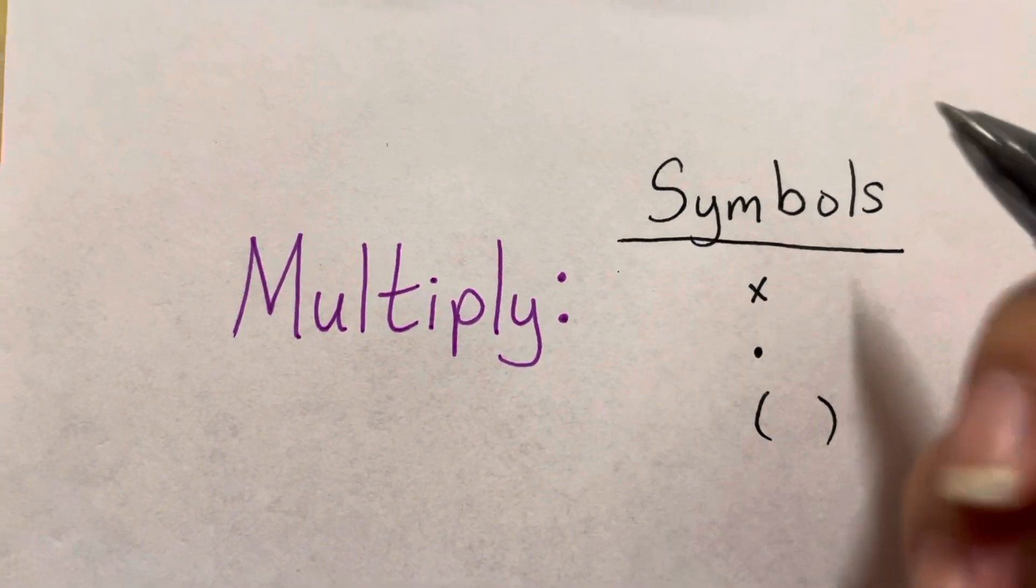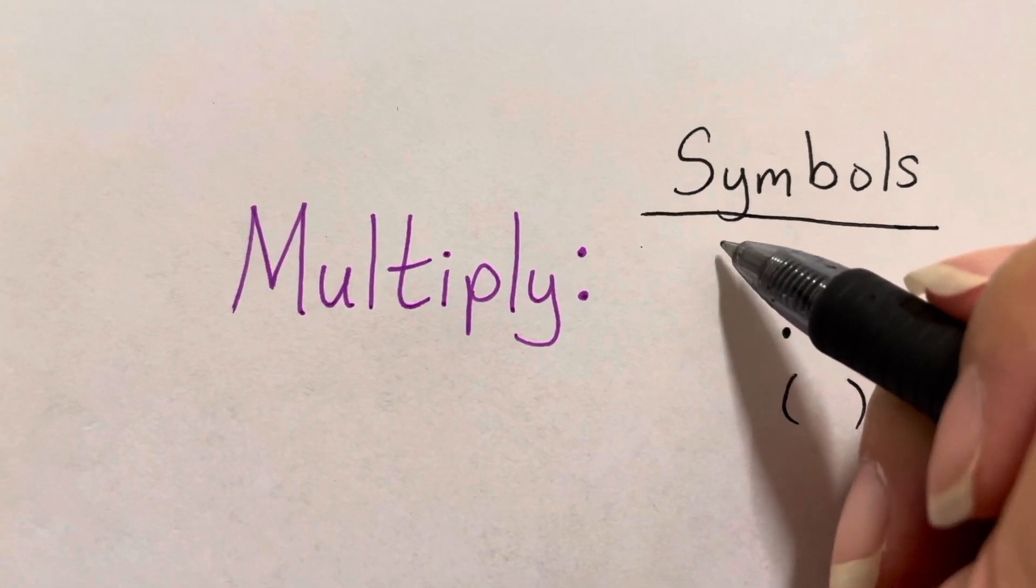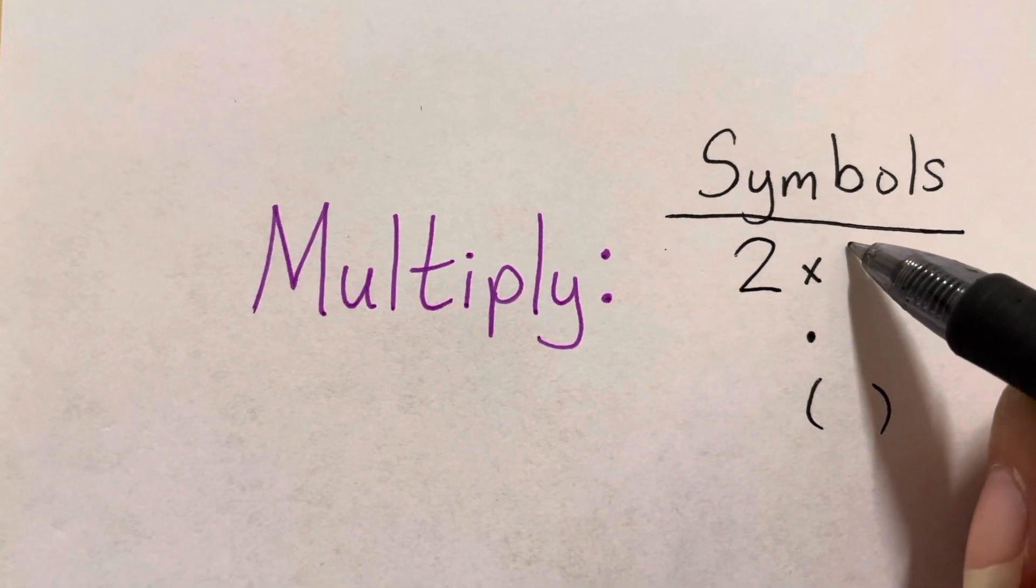You might see an x. So, let's say, for example, it would be 2 times 4.